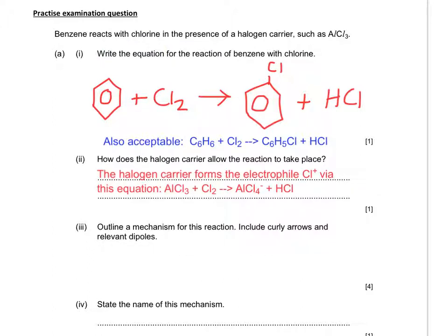The next part of the question asks how the halogen carrier allows the reaction to take place. It forms the electrophile Cl+ via the equation we talked about earlier. Notice that the equation wasn't explicitly asked for, but I've put it in anyway because it helps make the answer clearer and supports what I'm trying to say — if you can put something in to support your explanation to the examiner, it's more likely you'll pick up the right marks.